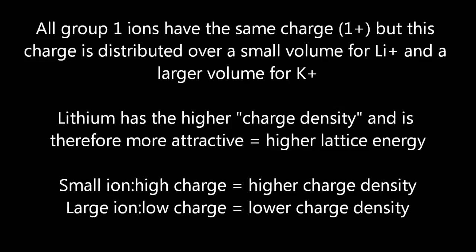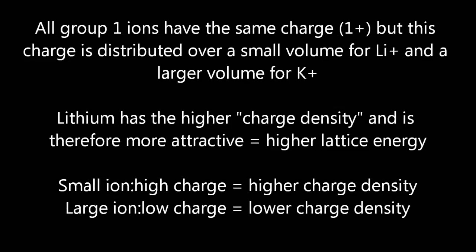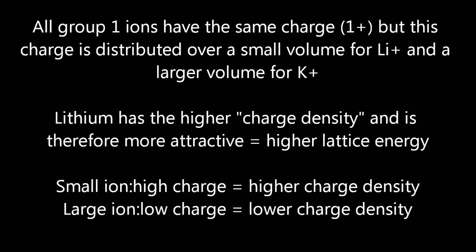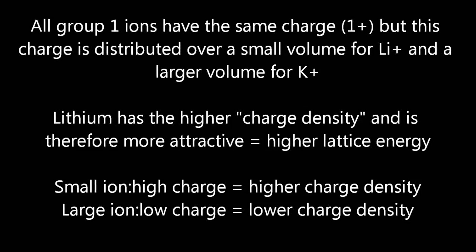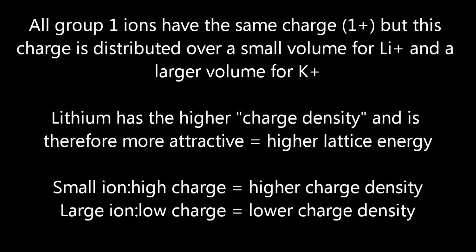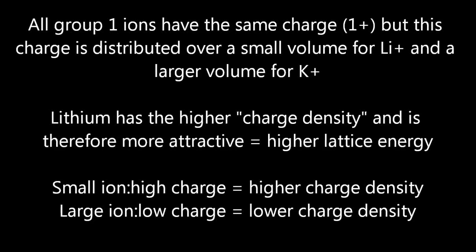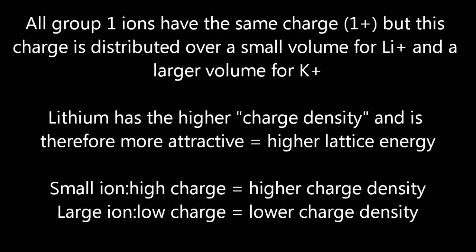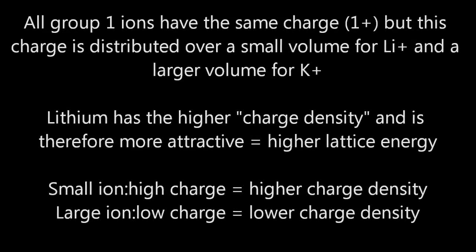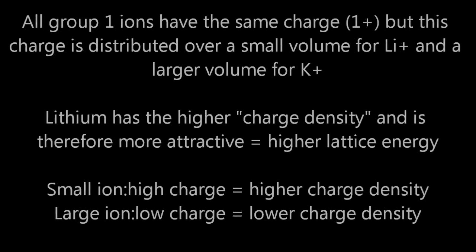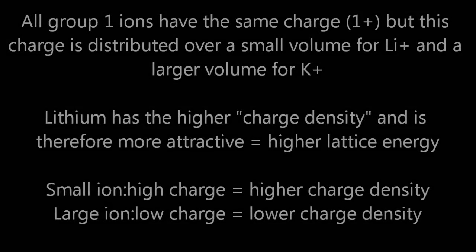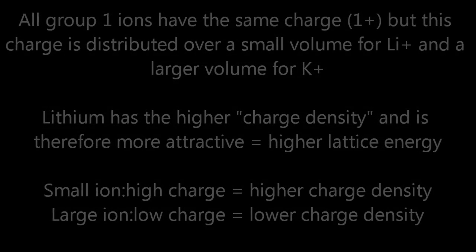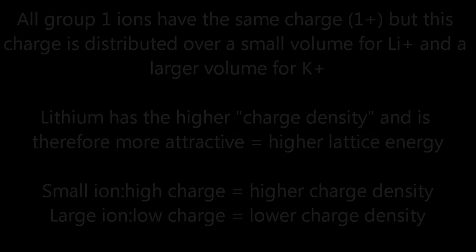Anything that is a small ion and/or has a high charge is likely to have a higher charge density. A larger ion, or one with a lower charge, will have a lower charge density. For example, the iodide ion is very big with a charge of just minus 1, so it's going to have a lower charge density than something like the oxide ion, which is a lot smaller with a charge of 2 minus.